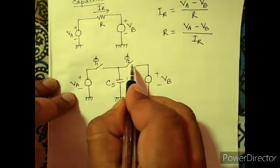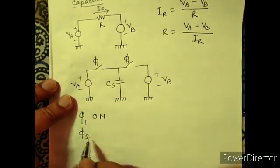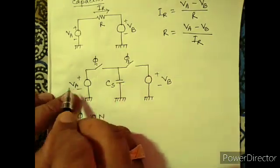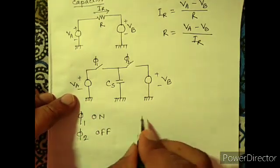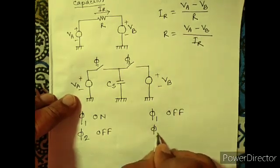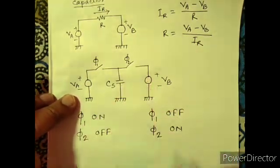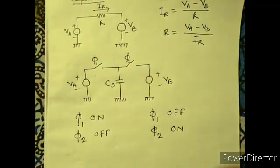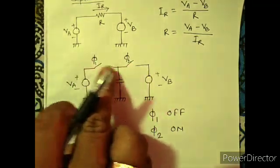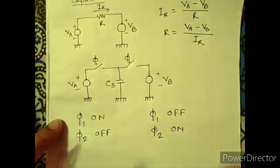If we put two switches here - this is phi 1, this is phi 2 - and we change this alternately. First if we switch on this switch, then this capacitor will charge through VA.